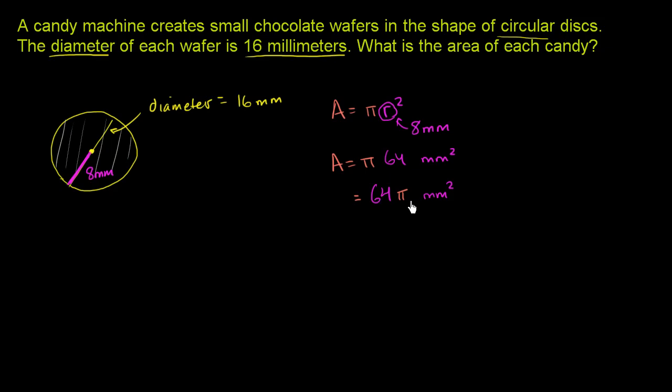Now, this is the answer, 64 pi millimeters squared. But sometimes it's not so satisfying to just leave it as pi. You might say, well, I want to get an estimate of what number this is close to. I want a decimal representation of this.